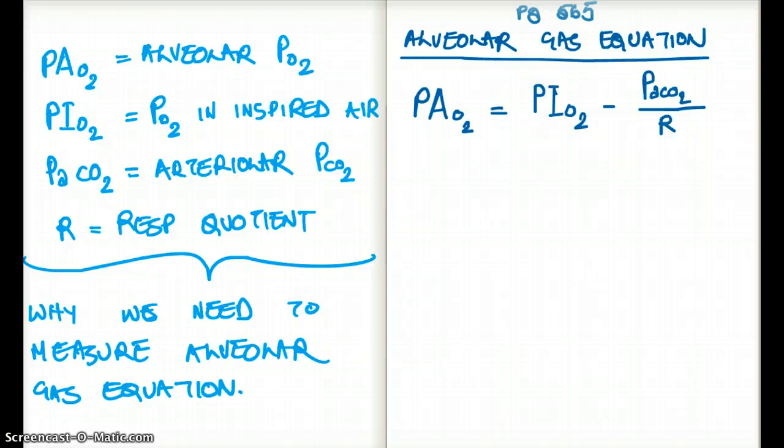In order to know A-a gradient, we have to know the oxygen in the alveolus and the oxygen in the arterial blood. That's one of the reasons why we would measure alveolar gas.